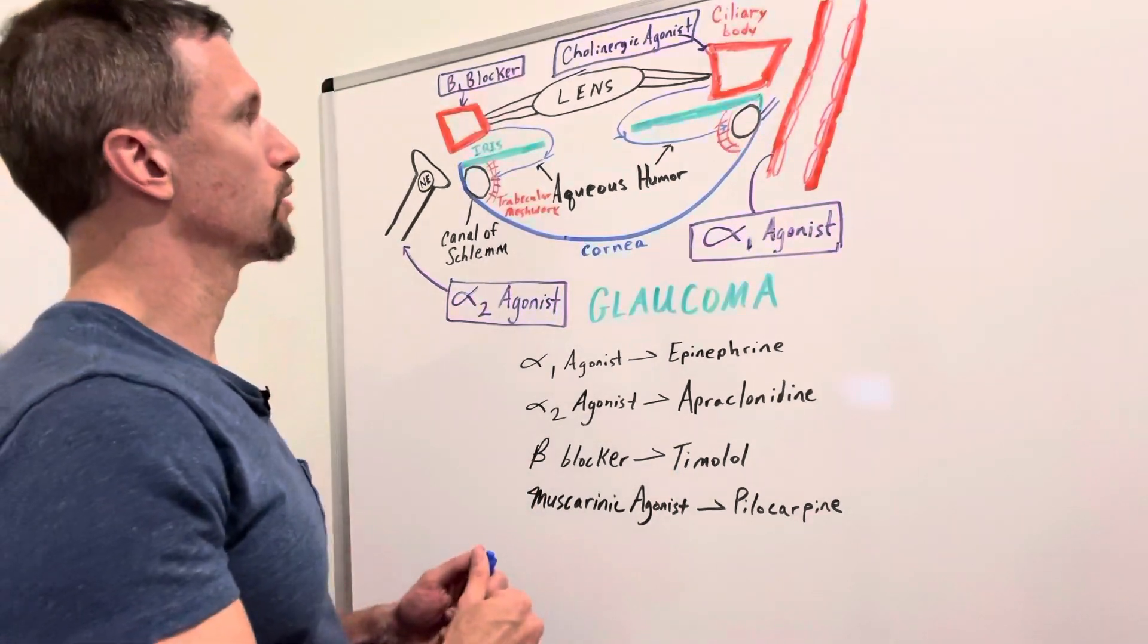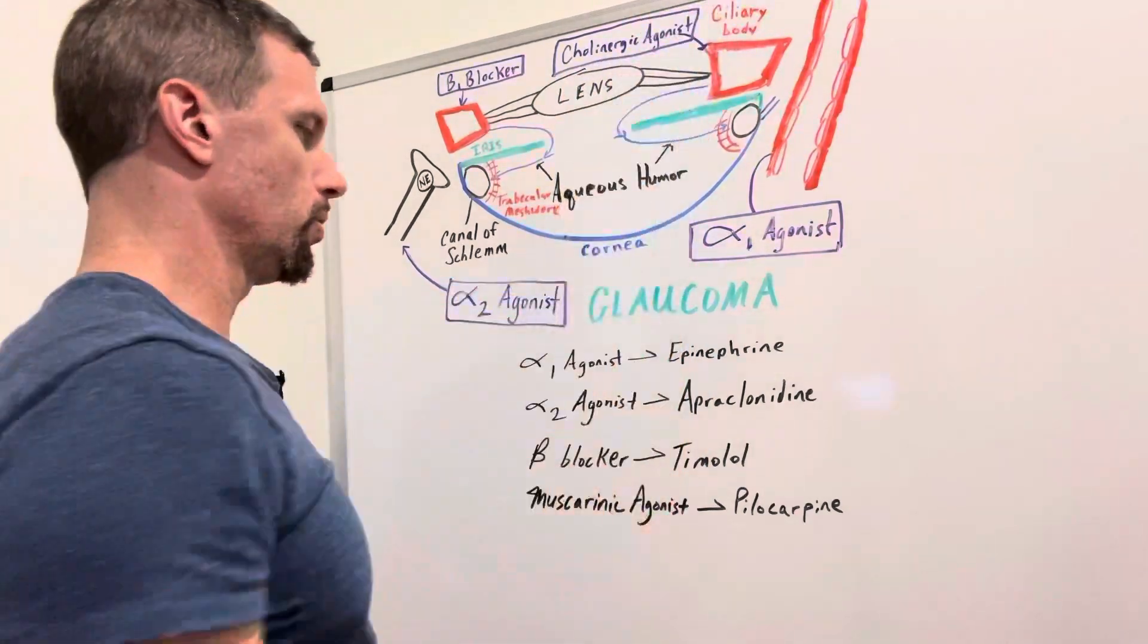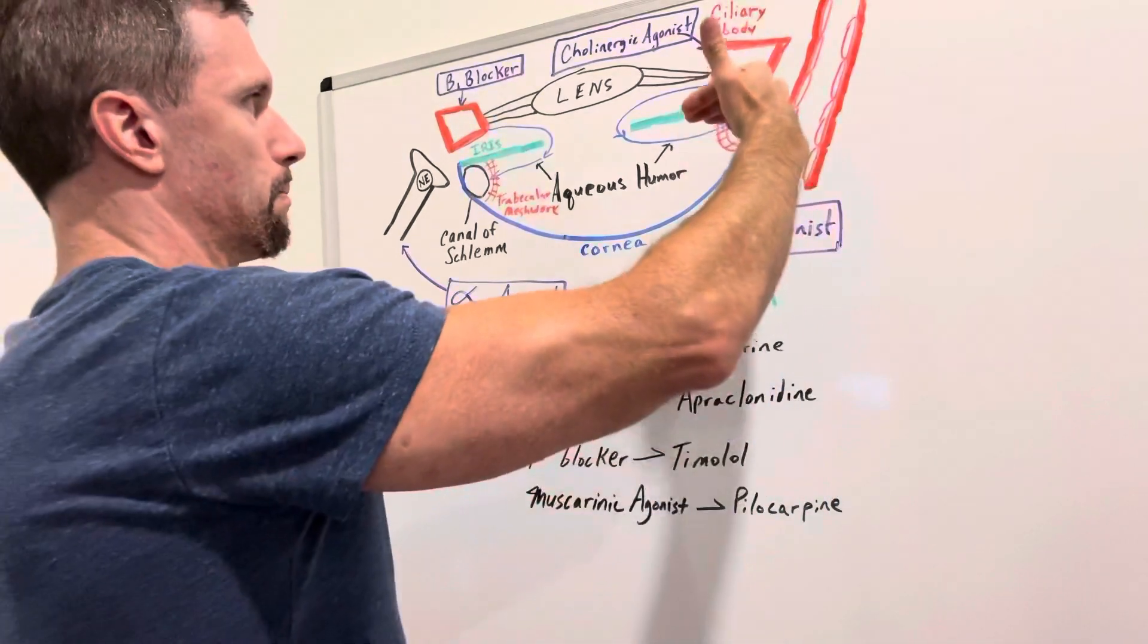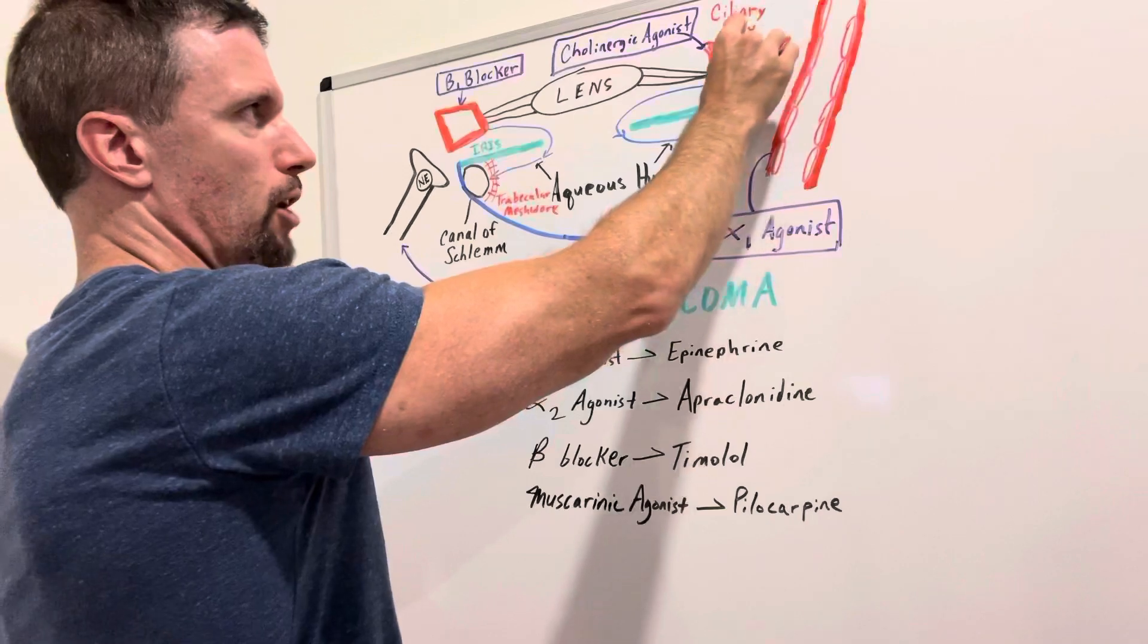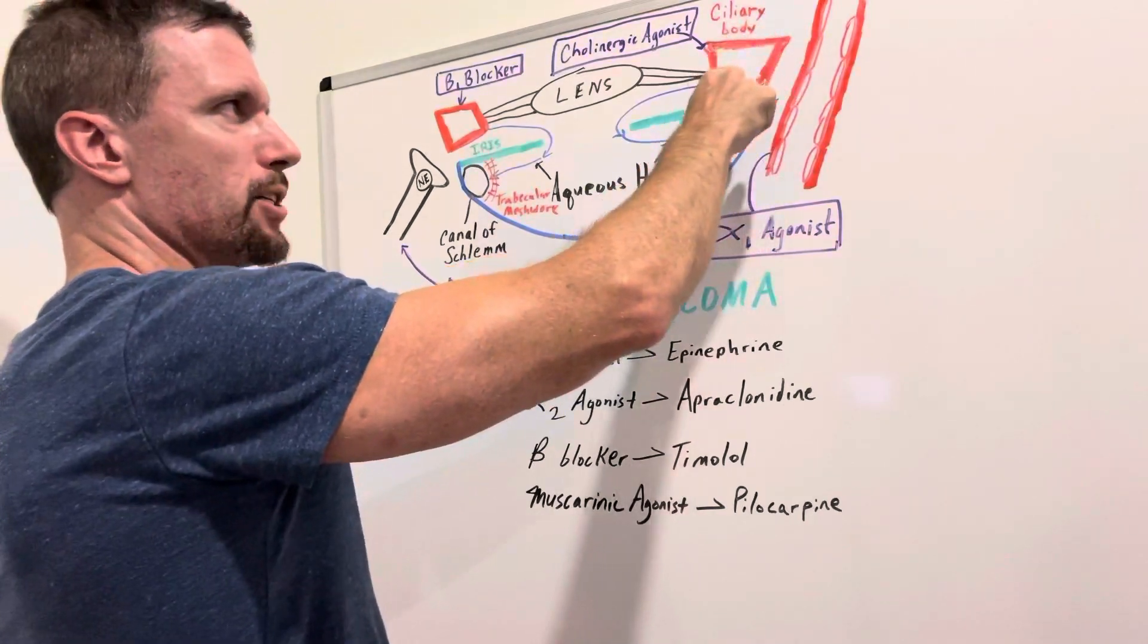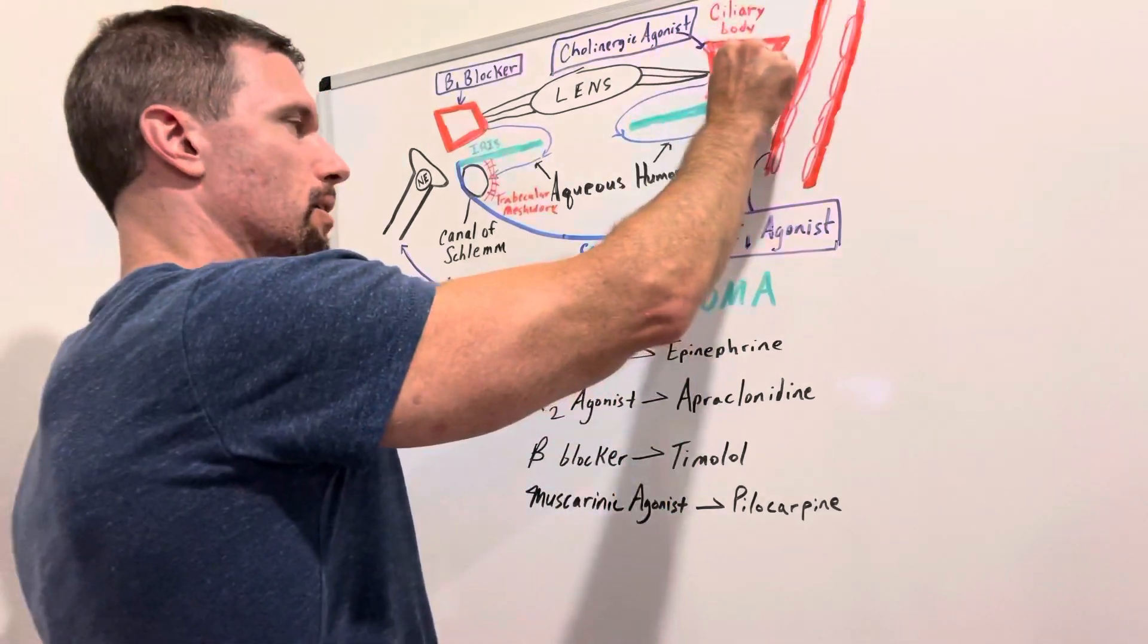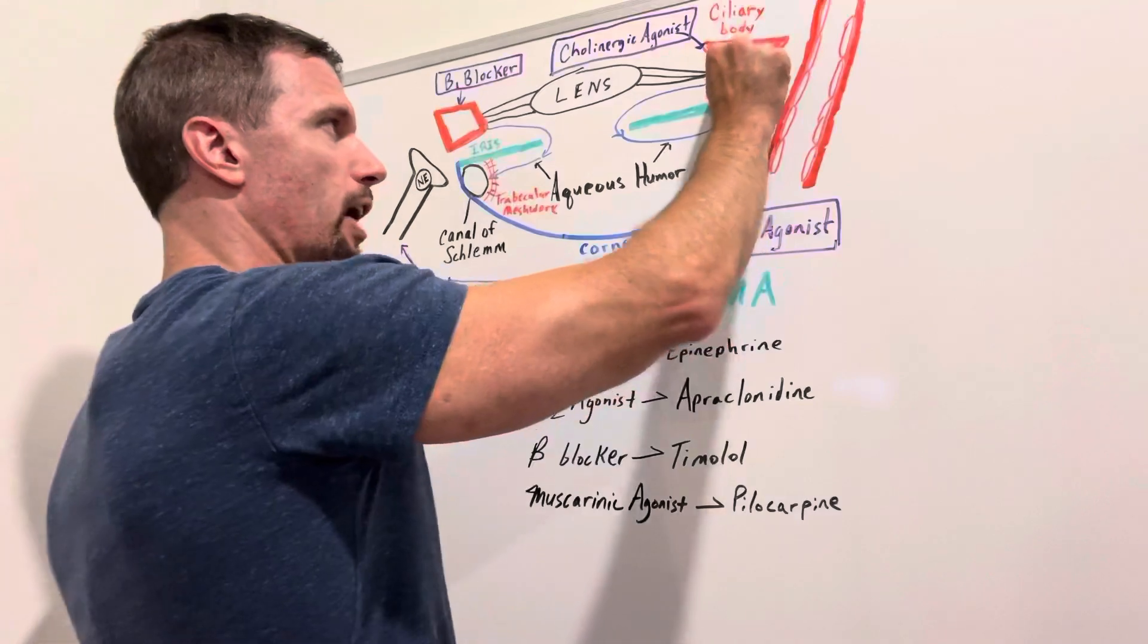So if we have muscarinic receptors and they bond to pilocarpine, what it's going to do is it's going to cause the ciliary muscle within the ciliary body to contract. So imagine the ciliary muscle in here with muscarinic receptors, it binds to acetylcholine or pilocarpine, causes contraction.